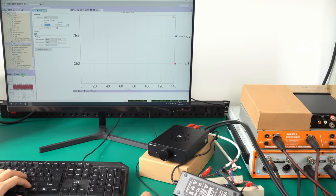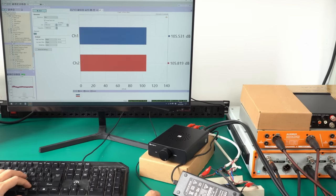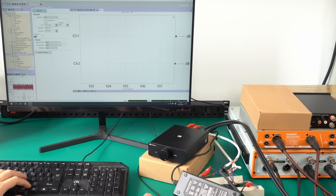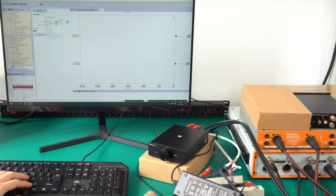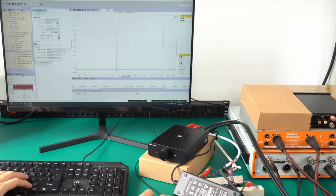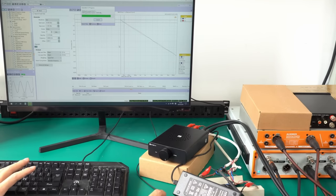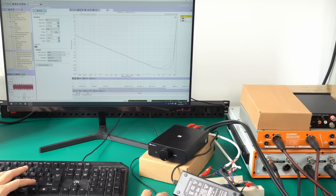Moving on to the signal-to-noise ratio test, the result is 106 decibels. The dynamic range is also 106 decibels. The power distortion test shows an impressive curve as well. That wraps up several key parameter tests.